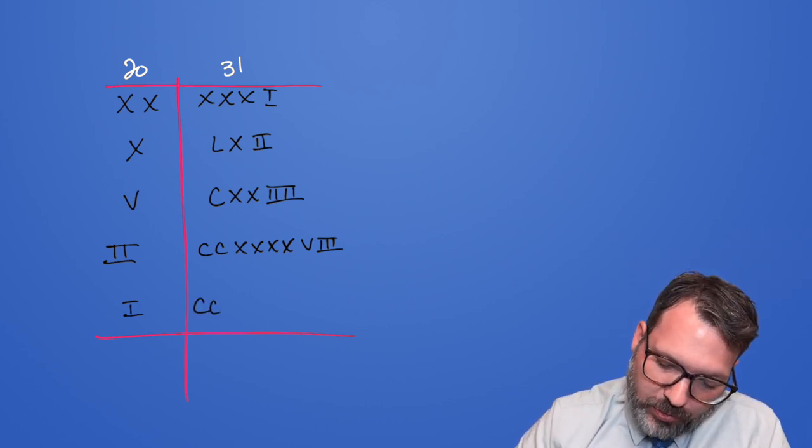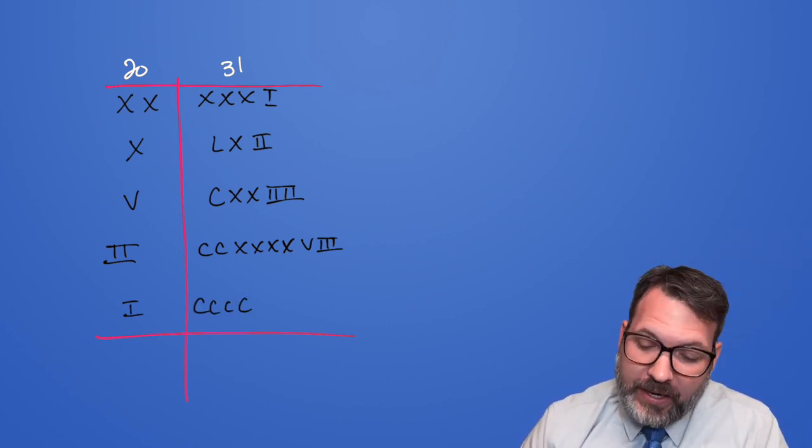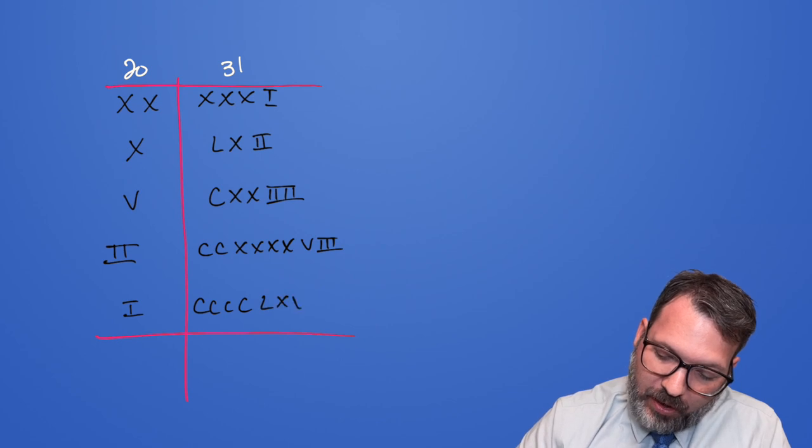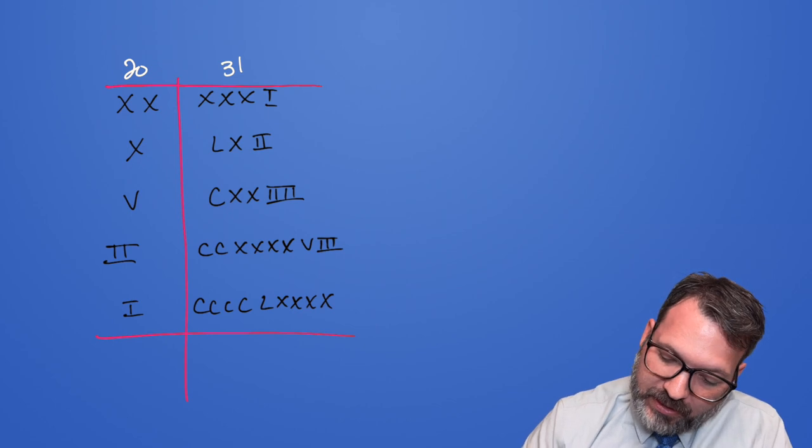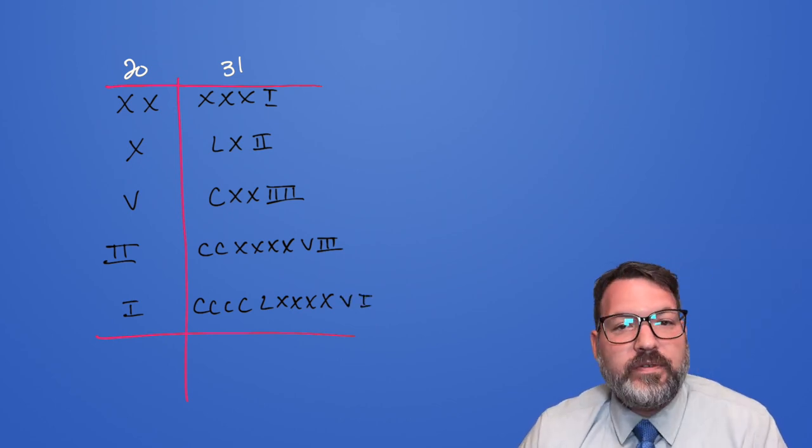One last time, we have one, two, three, four C's now, eight X's, but that's going to be an L and three X's, two V's, but that's the same as one more X, and then six I's, but that's the same as one V and one I.